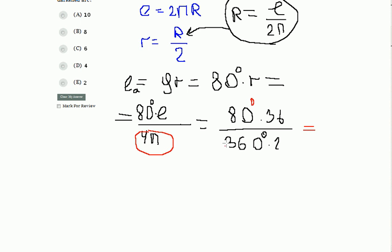After this step I can make some calculations. I take 36 and 36, I have 10 degrees, 10 degrees and 8 degrees, 8 and 2 is 4. The result is that the length of our arc is 4, and I can mark it here.